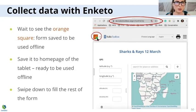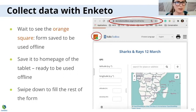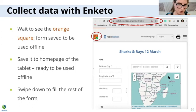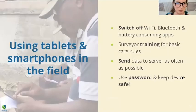When you do this, it will load and you just have to wait to see the orange square come up. Once it's there, you can save the form to the homepage of the tablet, and it will then be ready to be used offline. When you open it, you just have to swipe down to fill the rest of the form, like a classic web page.